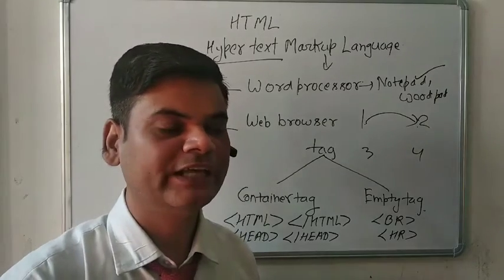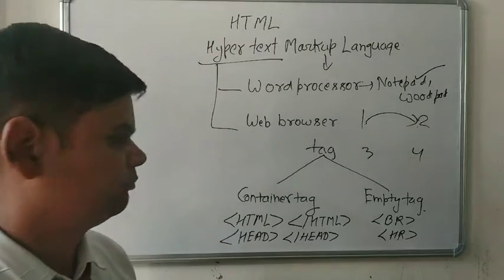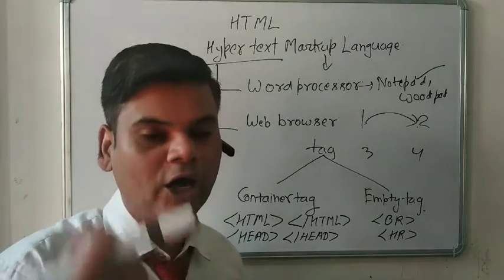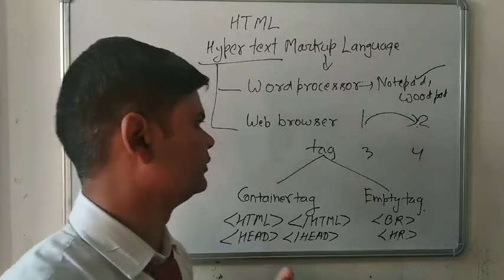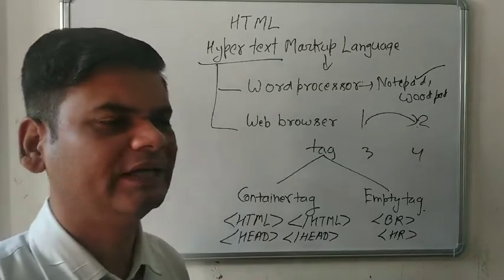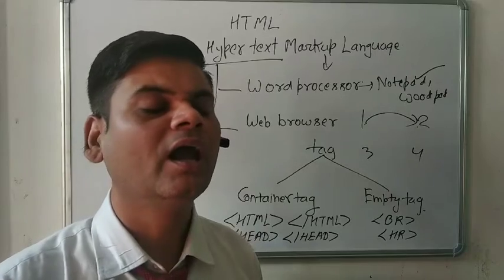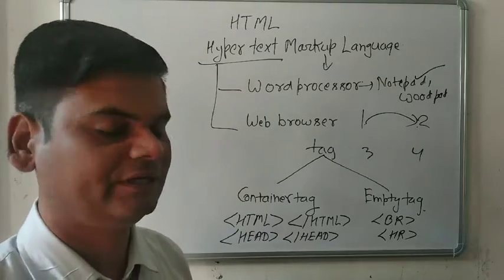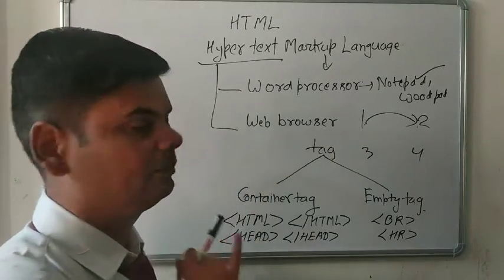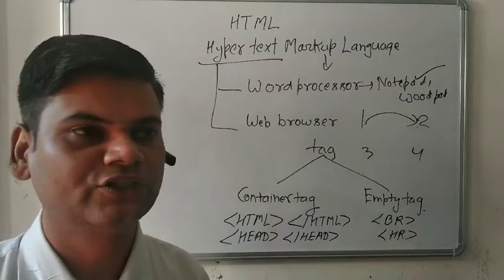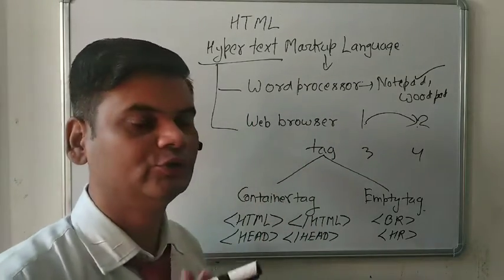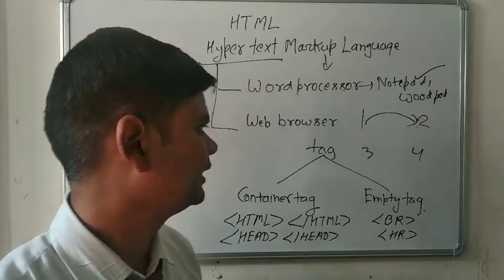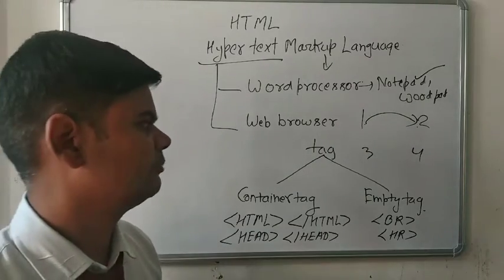The second thing is a web browser. A web browser is basically software installed on a client computer system. It is responsible for showing the output to the user which is sent by the server to the client machine. You can use Internet Explorer, Google Chrome — it depends on you. So for HTML we need two things: one is the word processor like Notepad or WordPad, and the second is the web browser like Mozilla, Google Chrome, or Internet Explorer.